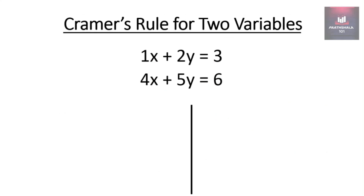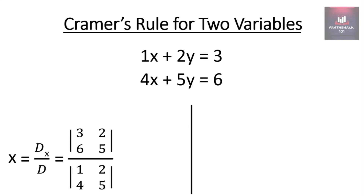So the value of x = Dx/D, which is the determinant of [3, 2; 6, 5] divided by the determinant of [1, 2; 4, 5]. For solving second-order determinants, we have created a video — the link is provided in the description, you can refer to that. On solving these determinants we get -3 divided by -3, which equals -1.